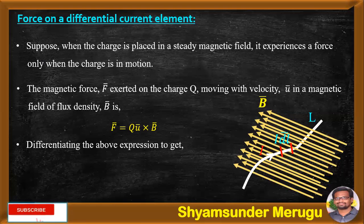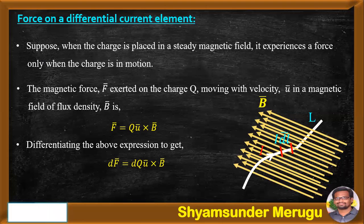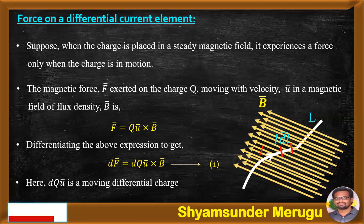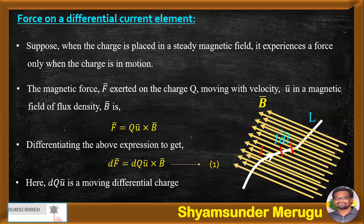Differentiating the above expression, we get dF bar equals dQ U bar cross B bar. Let us consider this as equation 1. Here, dQ U bar is indicating a moving differential charge.